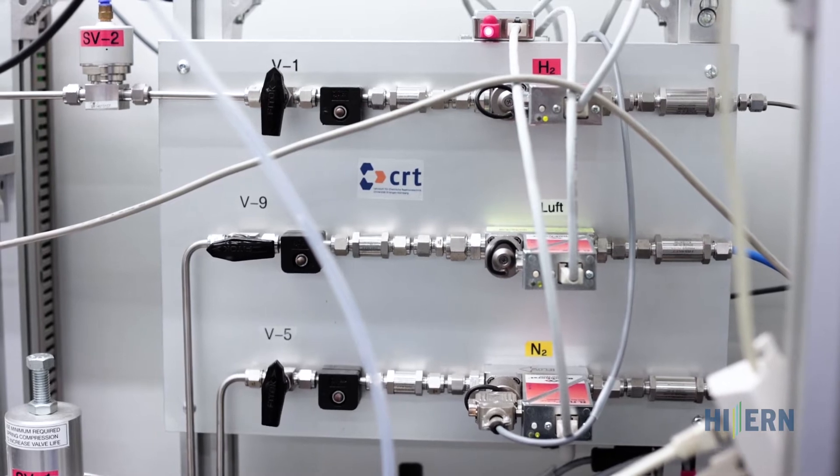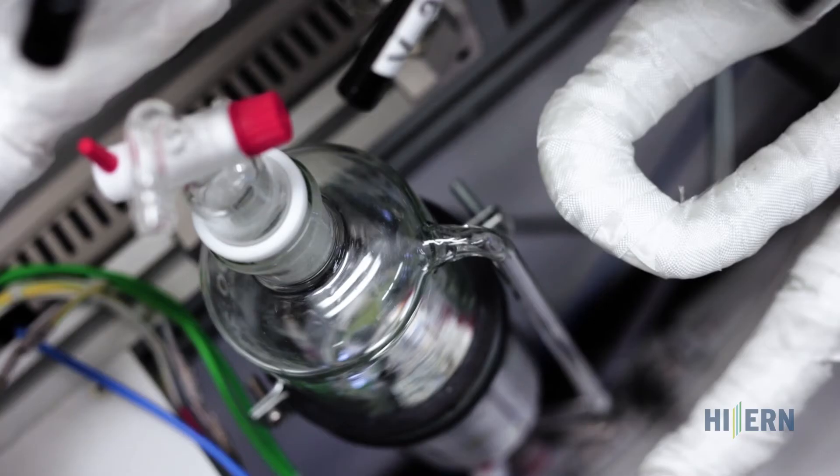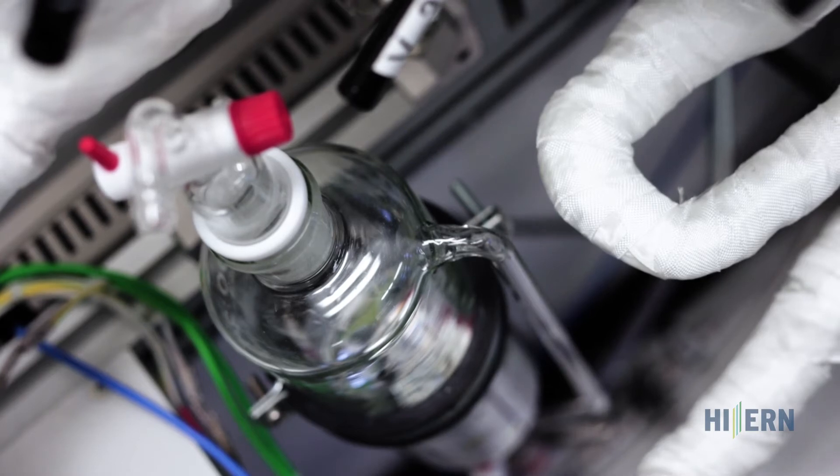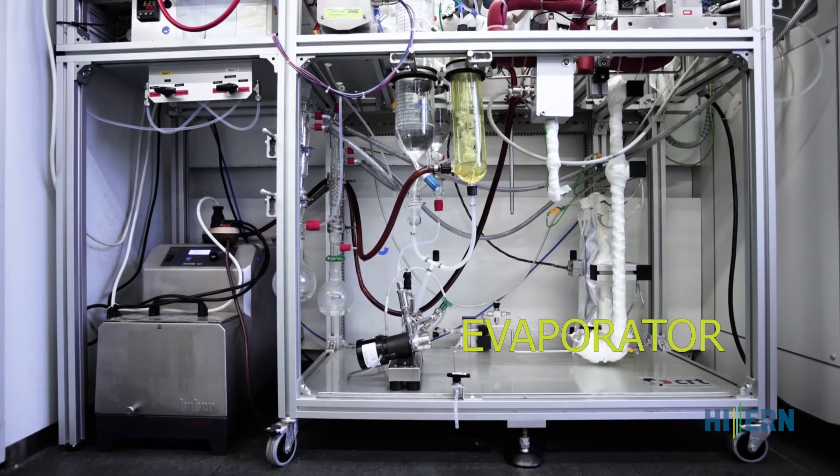The anode flow changes depending on the operating mode, hydrogen or LOHC. The LOHC is stored in a glass container and then pumped into an evaporator.